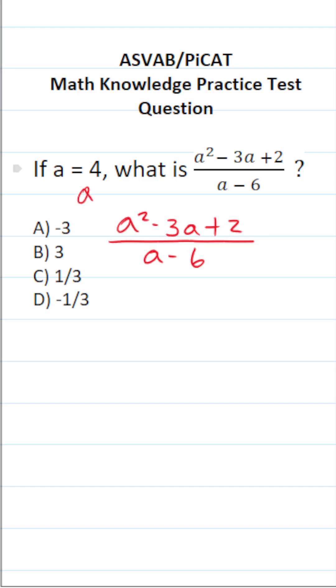In this case, we're going to be evaluating this expression when A equals 4. So we're going to take 4 and plug it in wherever we see A and evaluate accordingly. This becomes 4 squared minus 3 times 4 plus 2 over 4 minus 6.